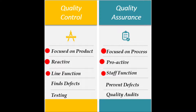Quality control finds the defects, whereas quality assurance prevents the defects. Quality control involves testing, whereas quality assurance involves quality audits.